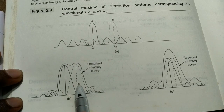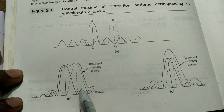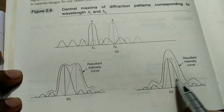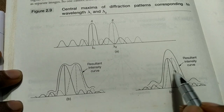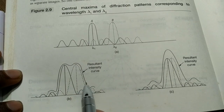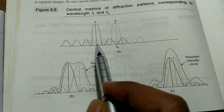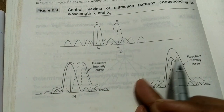That is the 'just resolved' condition. In the third condition, the principal maxima of both wavelengths overlap very closely, so the resultant appears like a single object. However, we can still recognize these are two objects when compared to the first case. In the 'well resolved' case, the two objects are clearly far from each other.